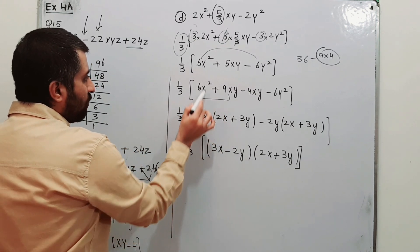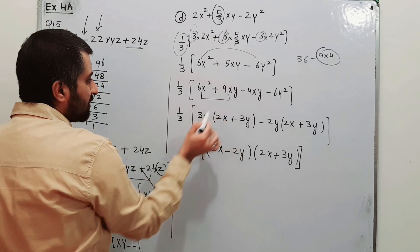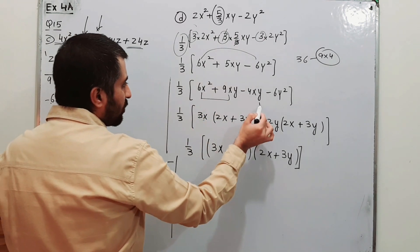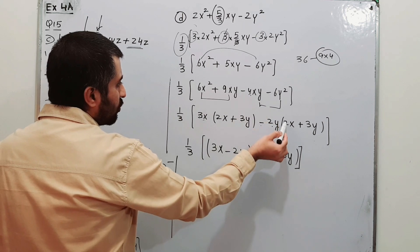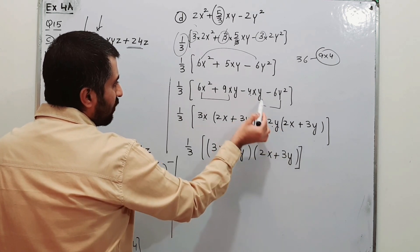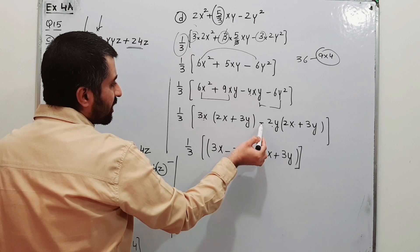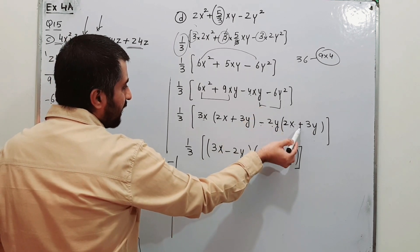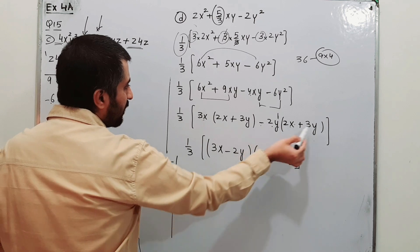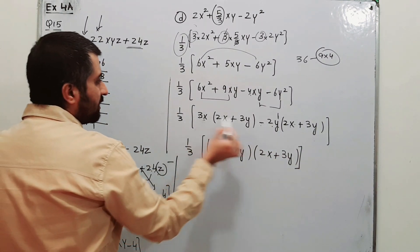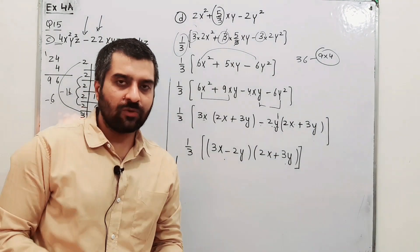From the first two terms take 3x as common: 3x times (2x + 3y). From the last two terms take minus 2y as common: minus 2y times (2x + 3y). The common bracket factor is (2x + 3y), giving (3x minus 2y)(2x + 3y). Multiplying by the outside factor of 1/3, the final answer for part D is (1/3)(3x minus 2y)(2x + 3y).